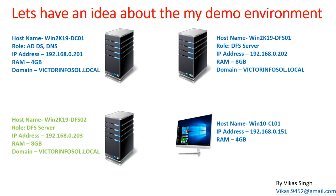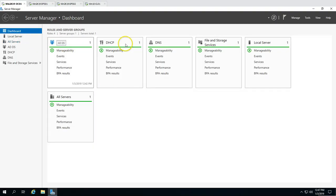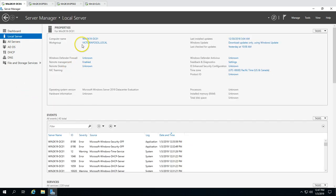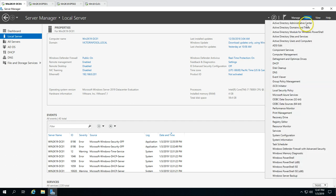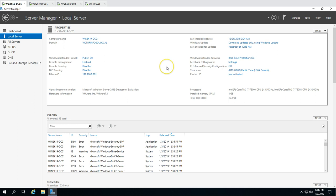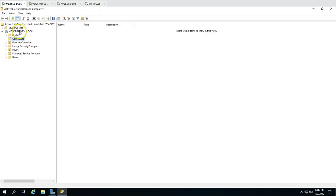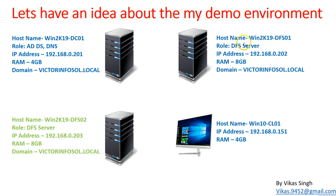This is my demo environment for DFS replication installation and configuration. The first server is win2k90dc01, which is my Active Directory and DNS server. The IP address is 192.168.0.201 and the domain name is victorinfosol.local. In Active Directory Users and Computers, we can see we've deployed DFS01. The next server is win2k90dfs01, our primary DFS server, with IP address 192.168.0.202, joined to the victorinfosol.local domain.